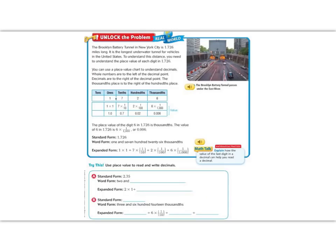Our unlock the problem begins with, the Brooklyn Battery Tunnel in New York is 1.726 miles long. We could also read this as 1 and 726 thousandths miles long. It is the longest underwater tunnel for vehicles in the United States. To understand this distance, we need to understand the place value of each digit in 1.726.